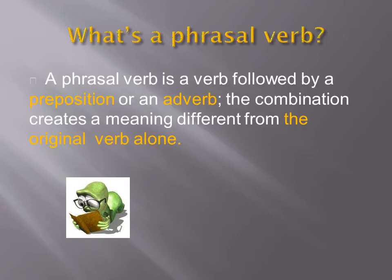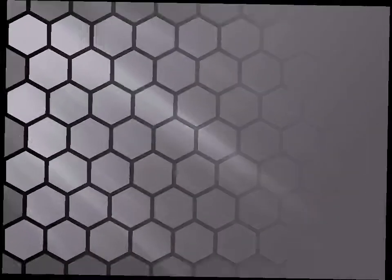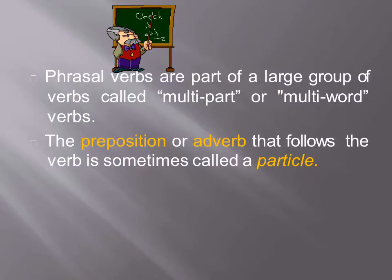A phrasal verb is a verb followed by a preposition or an adverb. The combination creates a meaning different from the original verb alone. Phrasal verbs are part of a large group of verbs called multipart or multi-word verbs. The preposition or adverb that follows the verb is sometimes called a particle.